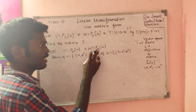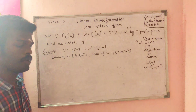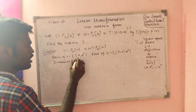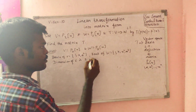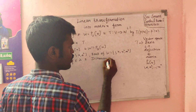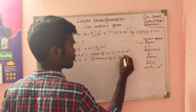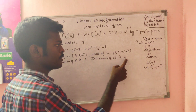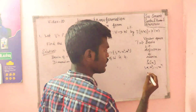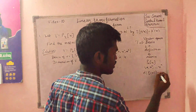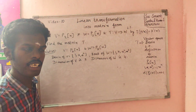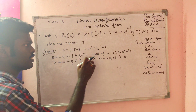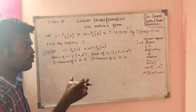The number of basis elements gives the dimension. Dimension of V is 3, and dimension of W is 4. The rule is: dimension of P_n of x equals n plus 1. So degree 2 gives dimension 3, and degree 3 gives dimension 4.